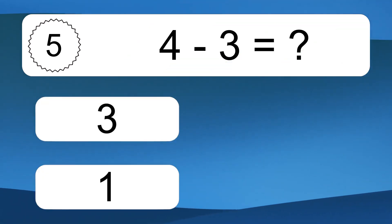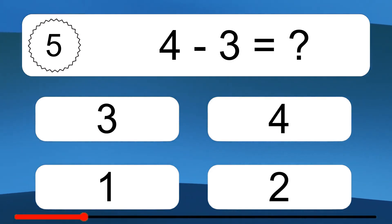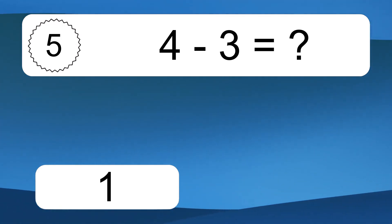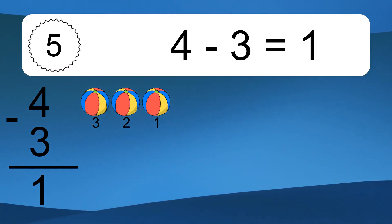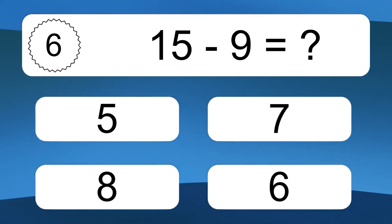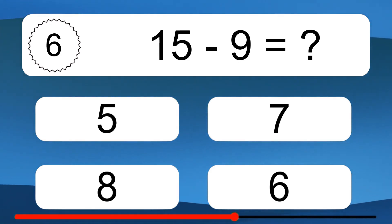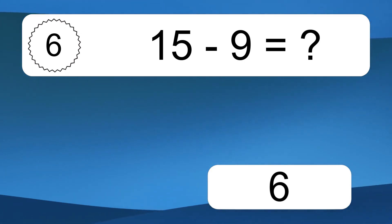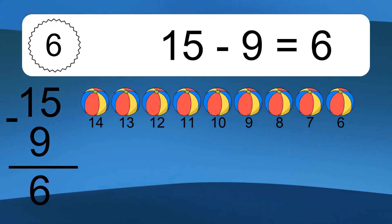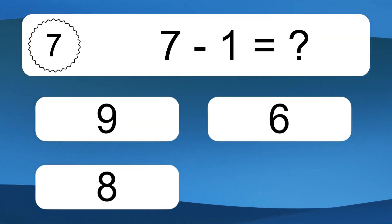4 minus 3 equals what? 15 minus 9 equals what? 15 minus 9 equals 6. Let's count it: 14, 13, 12, 11, 10, 9, 8, 7, 6.